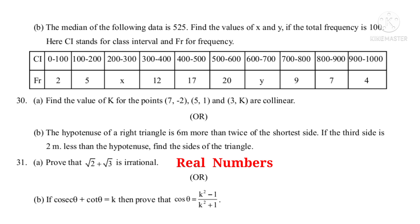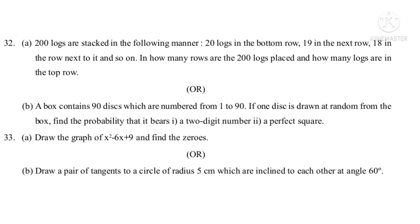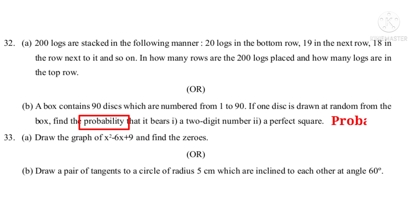Question 31B: If cosθ + cotθ = K, then prove that cosθ = (K² − 1)/(K² + 1) — from Trigonometry. Question 32A: Two hundred logs are stacked with 20 logs in the bottom row, 19 in the next, 18 in the row after that, and so on. In how many rows are the 200 logs placed and how many logs are in the top row? — from Progressions. Question 32B: A box contains 90 disks numbered 1 to 90. If one disk is drawn at random, find the probability that it bears: (1) a two-digit number, (2) a perfect square — from Probability.